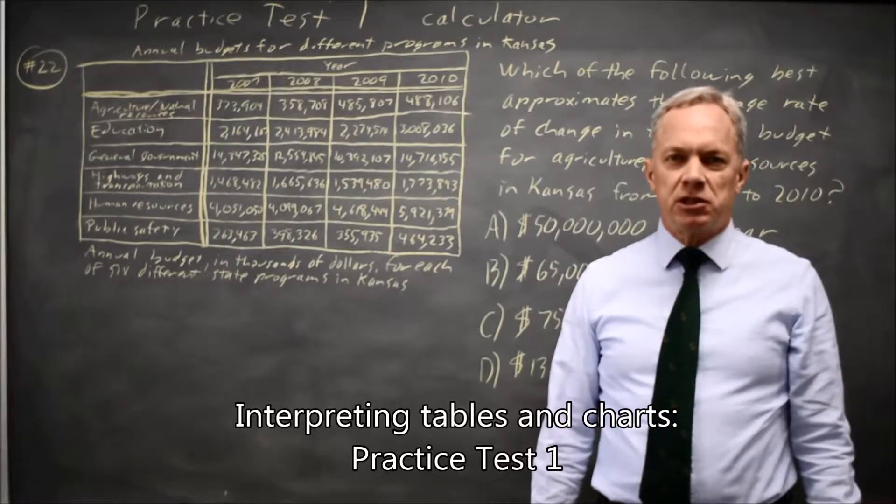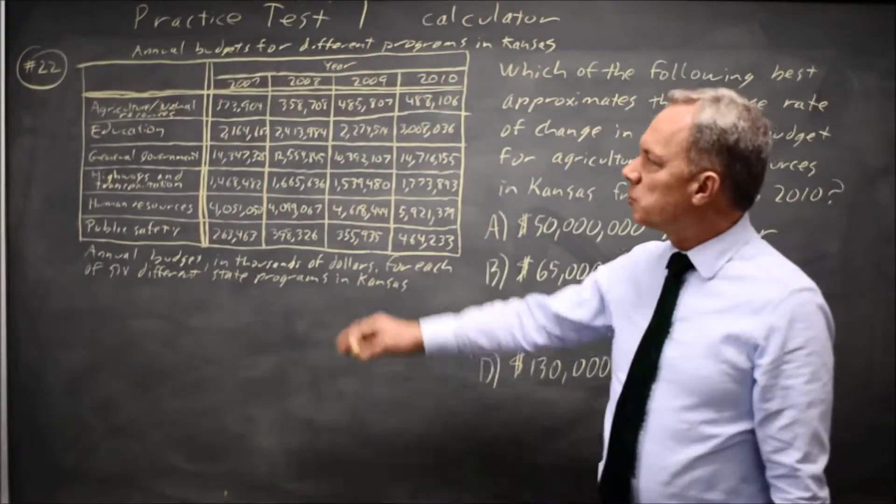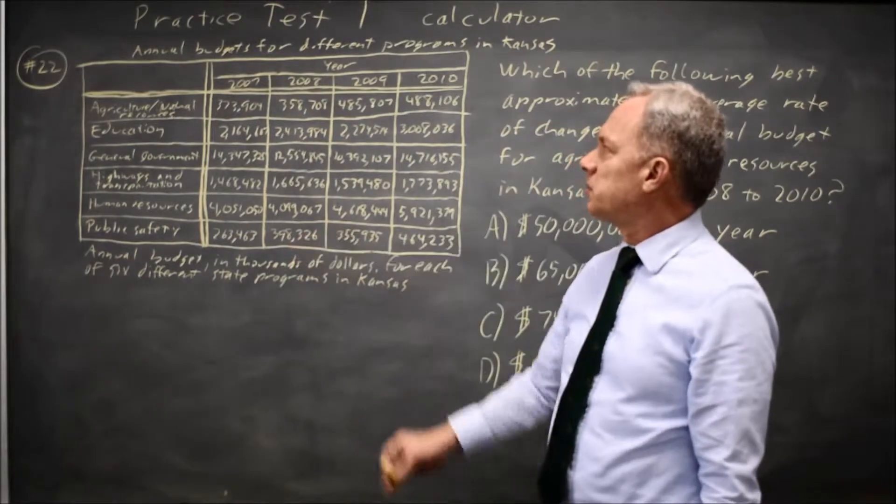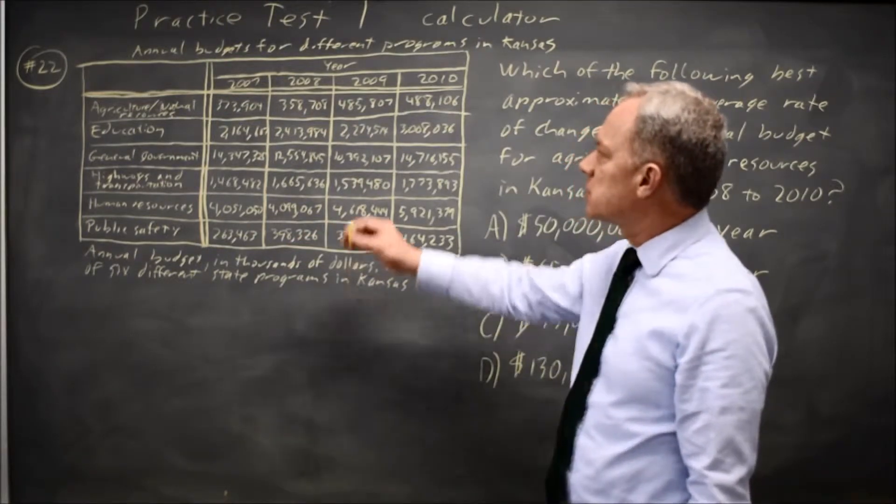This is calculator question number 22 from practice test one. College Board gives us a table of data for annual budgets in various programs in the state of Kansas for